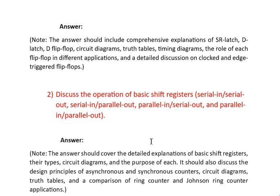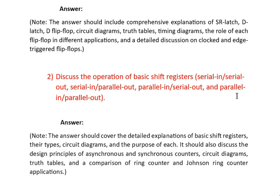The second question from unit 6 can be: discuss the operation of a basic shift register — serial in serial out, serial in parallel out, parallel in parallel out. In your answer, include a detailed explanation of basic shift registers, their types, circuit diagrams, and the purpose of each. You can also discuss the design principles of asynchronous and synchronous counters, circuit diagrams, truth tables, and the comparison of ring counter and Johnson ring counter along with their applications. Always draw the truth table for unit 5 and 6 questions.